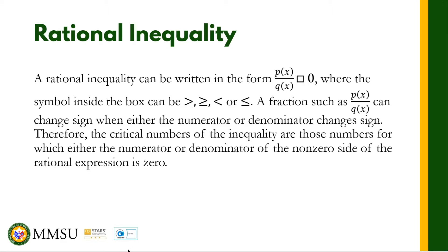Hello everyone and welcome back to our lesson in EngTan. For this video I am going to talk about rational inequality. A rational inequality can be written in the form p(x) over q(x) compared to zero, where the symbol can be any of the four inequality symbols. A fraction such as p(x) over q(x) can change sign whether either the numerator or denominator changes sign.